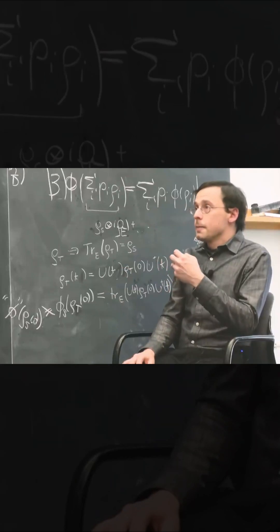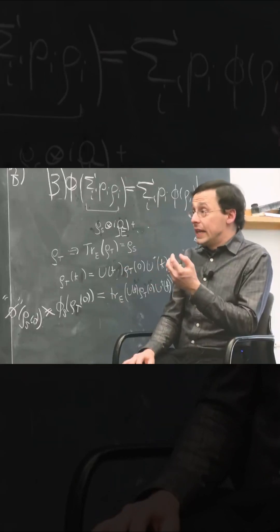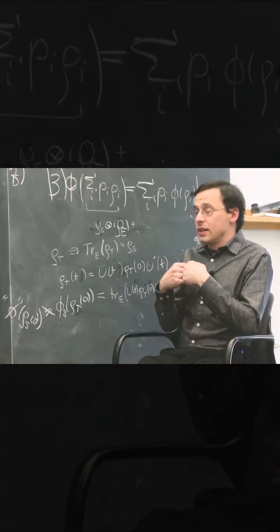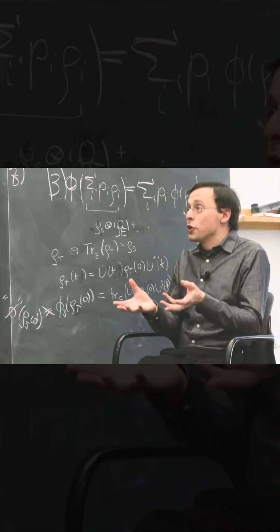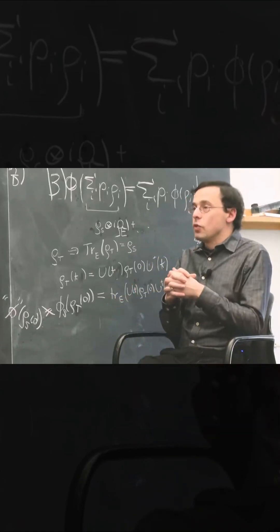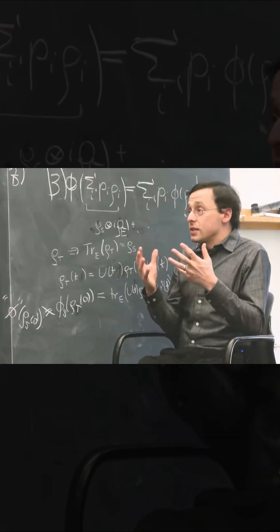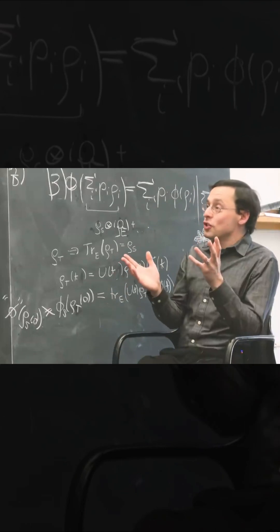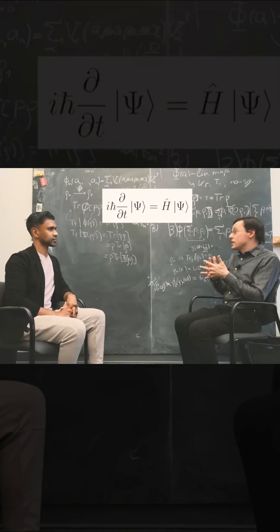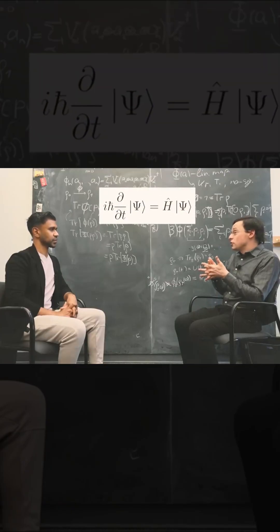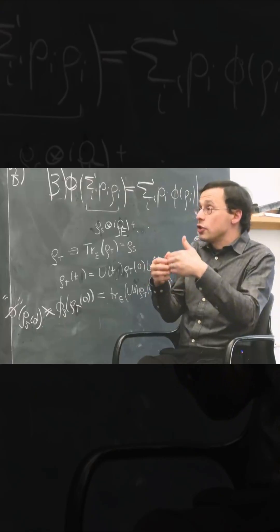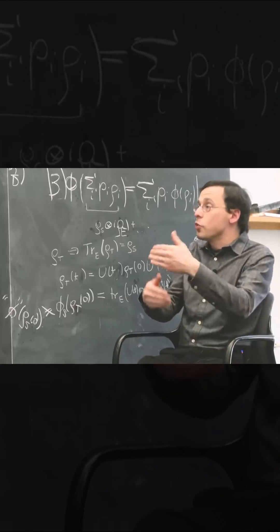The wave function plays a functional role in quantum mechanics — it does certain things for you in the theory. We study its change with time. There's this famous equation called the Schrödinger equation, which roughly says that when a system is left to itself, not being disturbed, not exchanging information with any other systems, it has a wave function that changes with time in a smooth way.